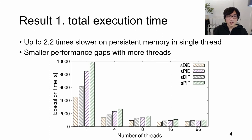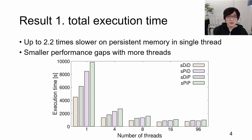The graph shows the total execution time for different numbers of threads. We observed 2.2 times longer execution time of persistent memory than DRAM when the bulk loading was single-threaded. By contrast, when the bulk loading was more intensively multi-threaded, the performance gap became smaller, reaching 1.3 times at 96 threads.